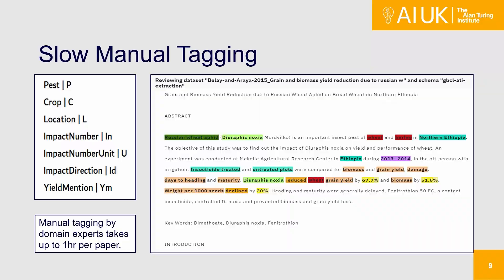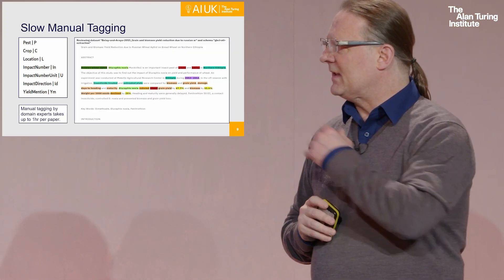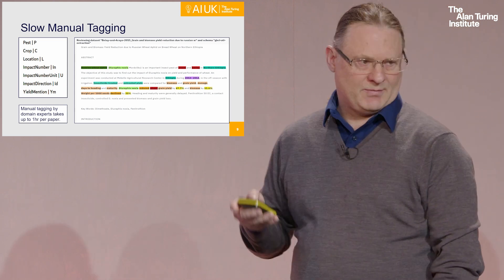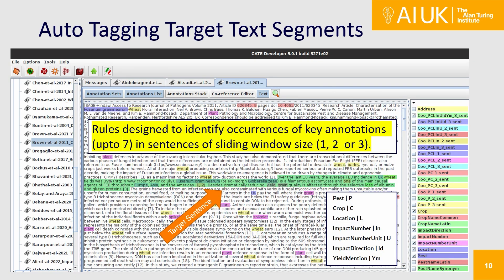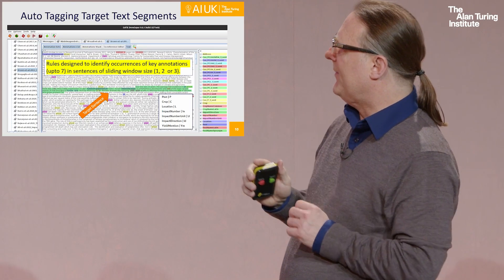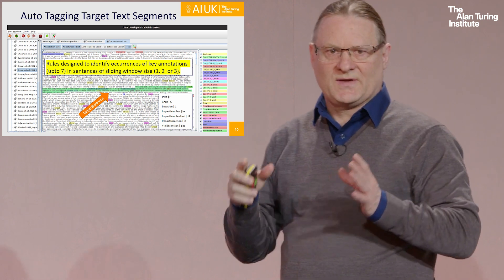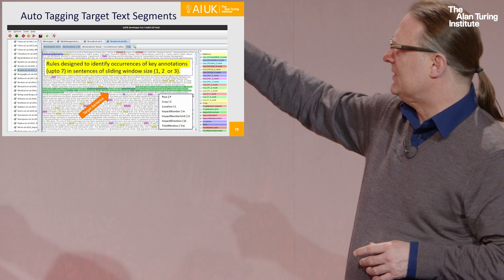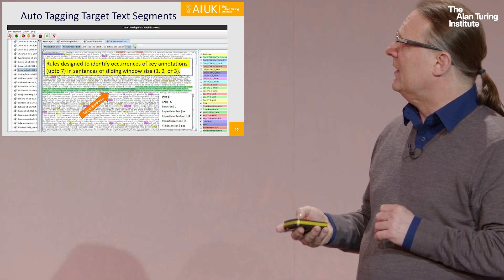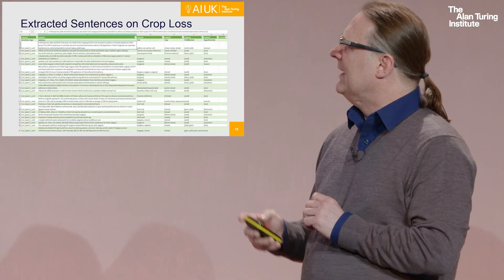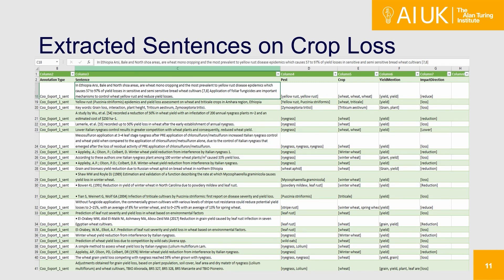Let's take a quick look at what we're actually trying to annotate or extract. We're interested in pests, crops, location of crop loss, the impact of the loss — was it positive, negative, neutral? What is the numerical value of that loss — 10 times or 100 kilograms per hectare? What is the scale of the loss? And we want the yield mention as well. A key thing to point out here also is that not all the information is in one sentence — it's spread across multiple sentences. So we have this challenge of co-reference resolution, which all NLP people are familiar with. That's another reason why we have lower performance. Manual tagging can take up to an hour per paper — it's very slow.